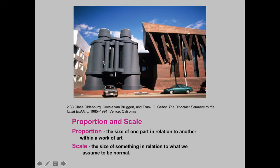Here we have an architectural example of proportion and scale. This is in Venice, California — I've driven by this a few times. We are playing around with the scale and proportion of this object — a pair of binoculars — which is completely off, out of control. This is for a giant that doesn't exist. It's enormous — it's even a parking garage; you drive through it and park your car in there. This is by Claes Oldenburg and his wife Coosje van Bruggen. This is a Frank Gehry building, and he also designed the New Getty.